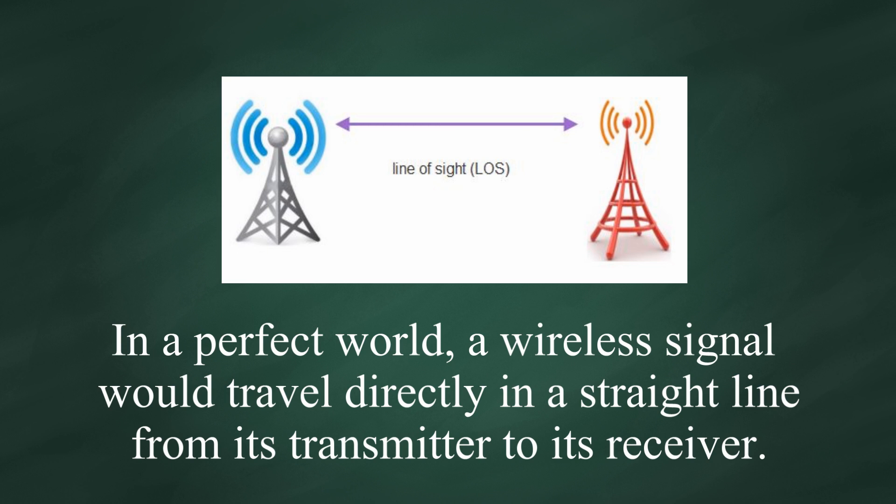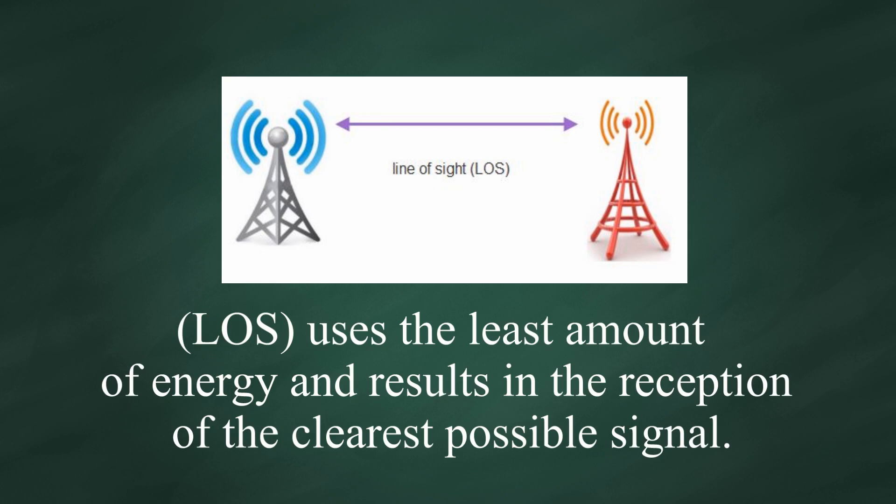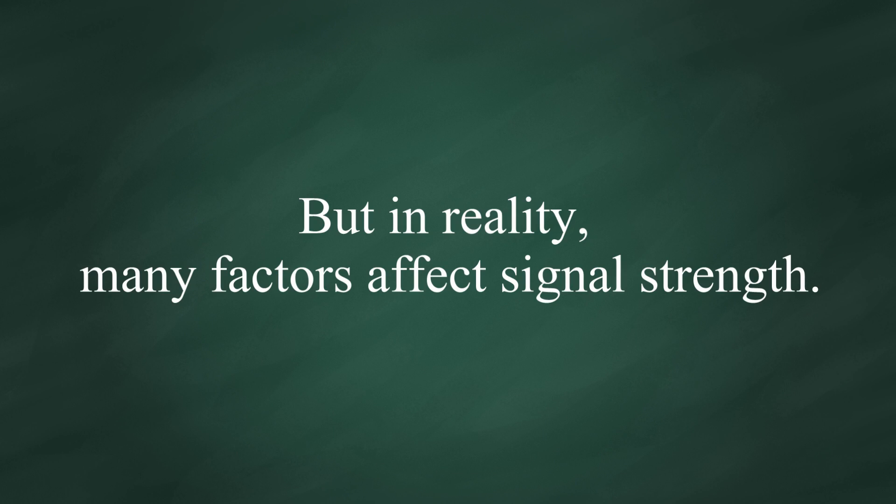In a perfect world, a wireless signal would travel directly in a straight line from its transmitter to its receiver. This type of propagation, known as line of sight, uses the least amount of energy and results in reception of the clearest possible signal. But in reality, many factors affect signal strength.